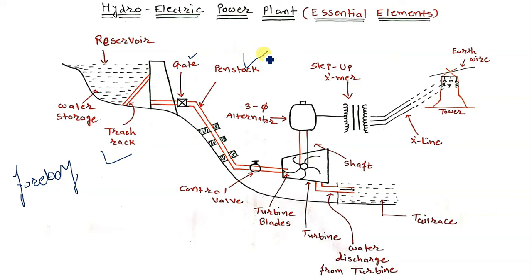Next is the penstock. We have already discussed penstock but to revise: these are cast iron pipes supported in place. They run from the lower side of the dam down to the turbine and are used for carrying the water. The pressure of water is very high in the penstock as it flows from the dam to the turbine.